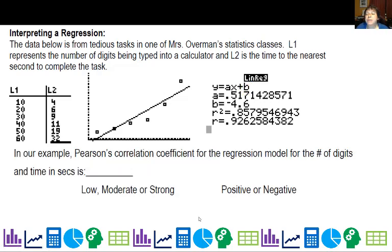Now, in our example, Pearson's correlation coefficient for the regression model is r, which is 0.926. Remember this is unitless, r does not have units. And 0.926 is definitely considered strong, and it's definitely positive.